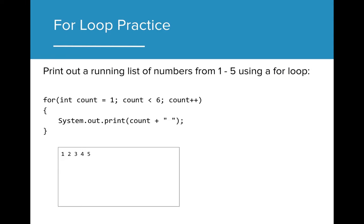Here's the implementation of that for loop. Notice that we used print instead of print line, so that the numbers can all appear on the same line. We also ended the loop by using less than 6, but we could have written less than or equal to 5.